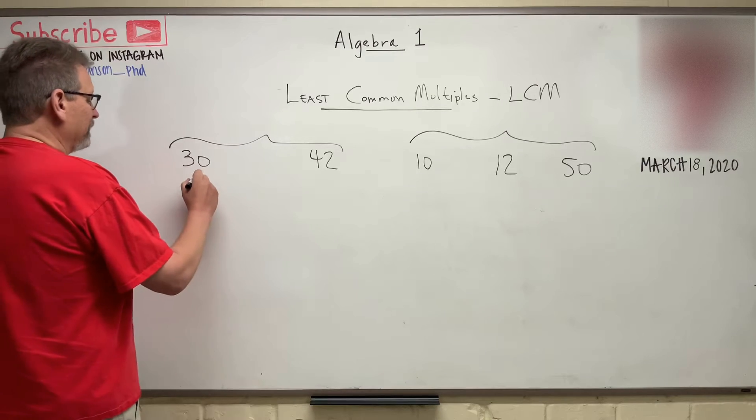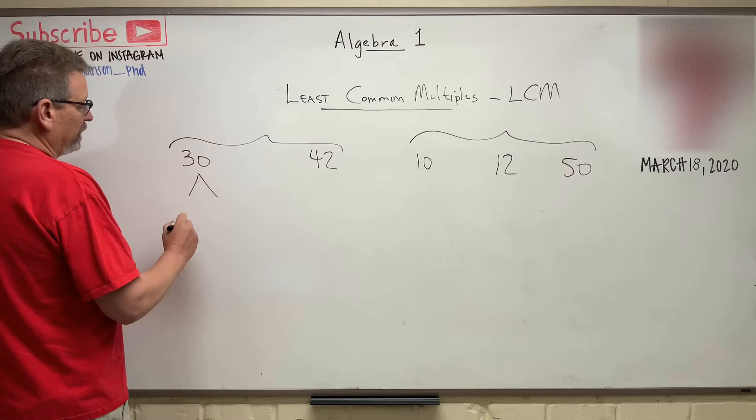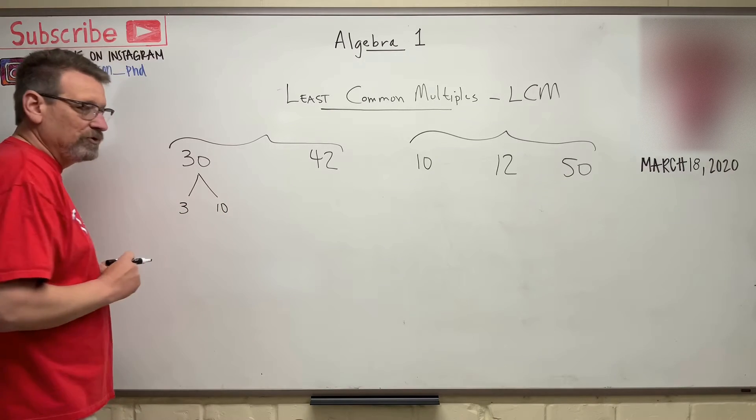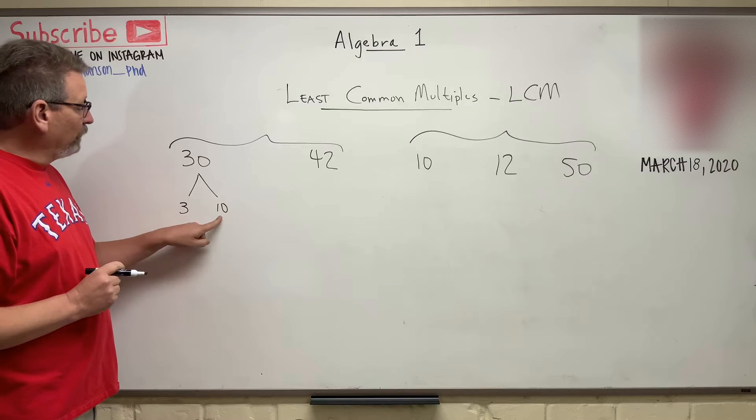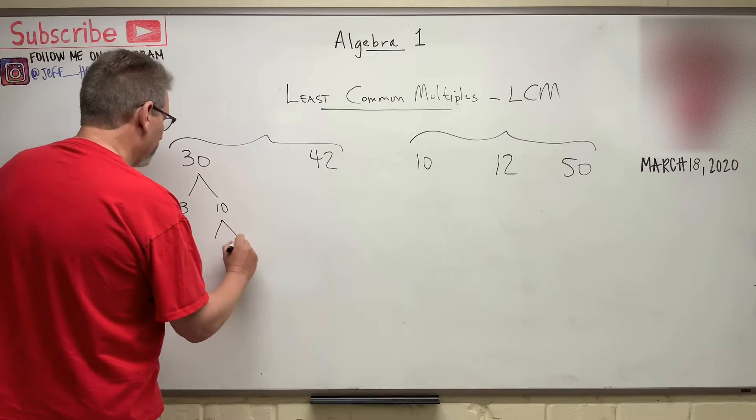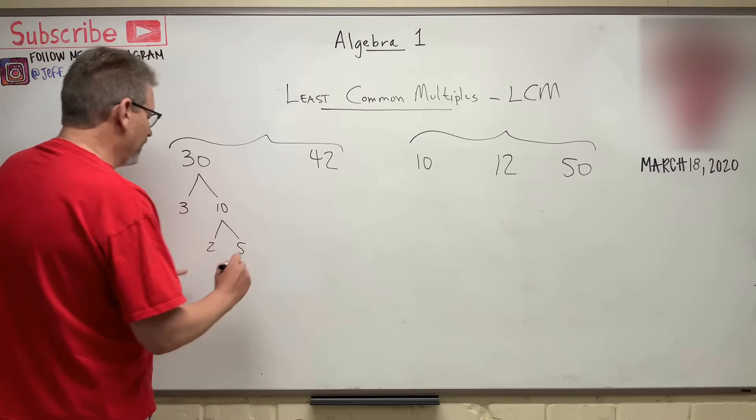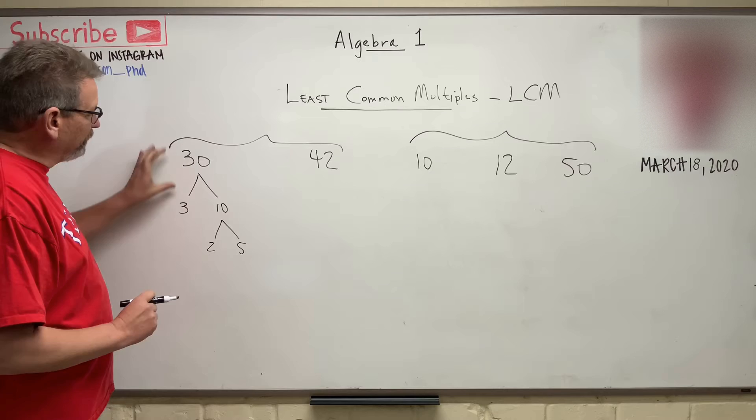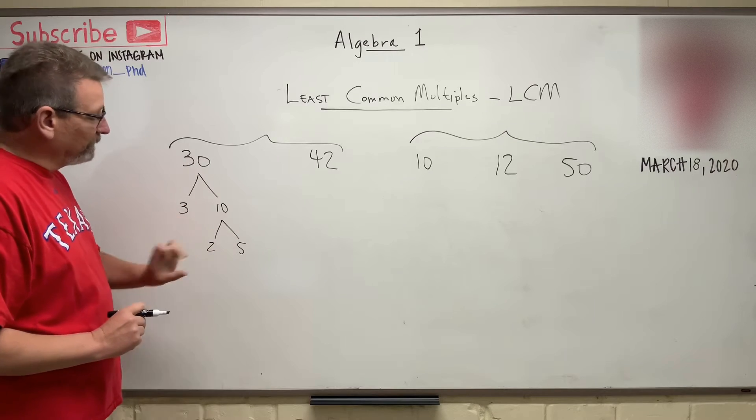So let's factor 30. I think 30 is 3 times 10. Does 10 factor? Yes, that's 2 times 5. And none of those things factor, do they? So this is the factor tree for 30. 3 times 2 times 5.